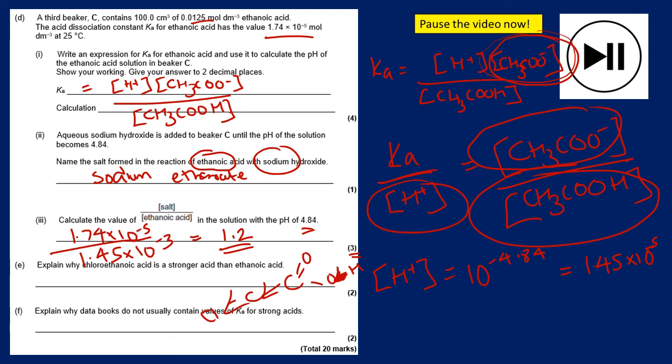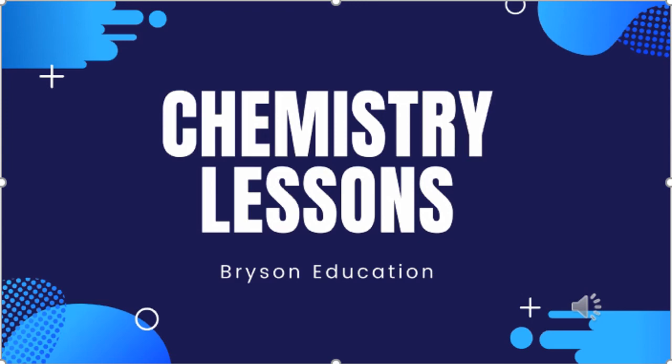Finally: data books do not usually contain Ka values for strong acids because strong acids fully dissociate and therefore don't have equilibrium constants — they fully dissociate and that's it. Hopefully you made it to the end — it's a long one. We're up to 90 subscribers; once we get to 100 I'll give away a free signed periodic table to one lucky follower, so stay tuned.